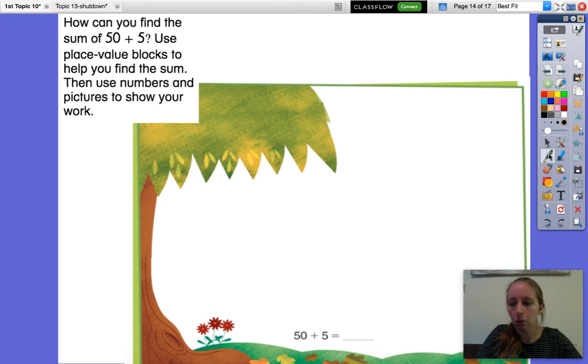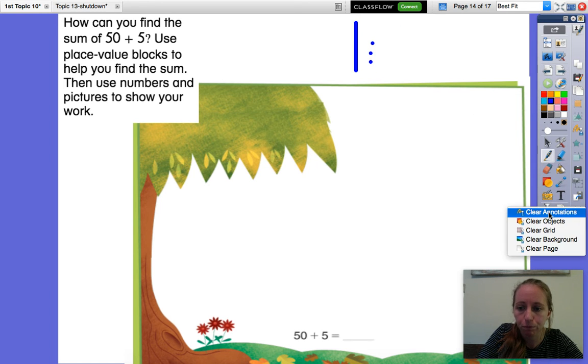So I know that at home we probably don't have place value blocks to use. We can definitely pull them up on the computer, but if you can't you can use a drawing. We've been drawing place value blocks all the time, right? So one way you can draw a place value box is a nice long line for tens and dots for ones. So this number would show 10, 11, 12, 13.